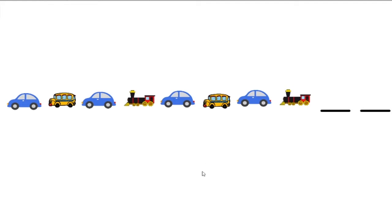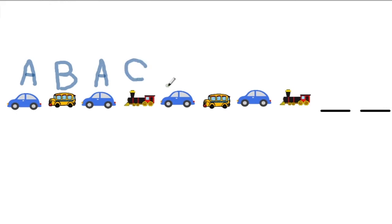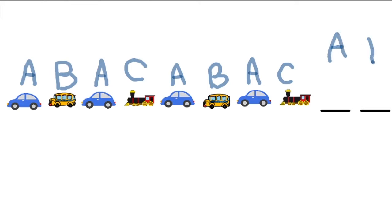So this is where using letters might help us. Let's label these objects. First car gets an A. First bus gets a B. Next car — we've seen car already, so it gets an A. Train — first time seeing a train, so train gets a C. Car is A, bus is B, car is A, train is C. So what we have here is an A, B, A, C pattern — A, B, A, C repeating. Every A is a car, so the next A must be a car. Every B is a bus, so the next must be a bus.